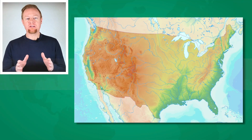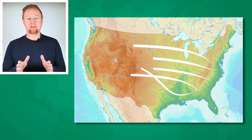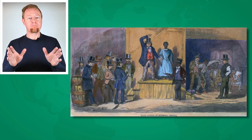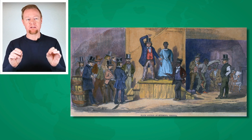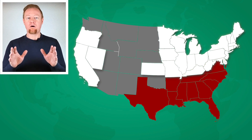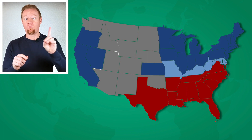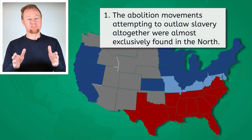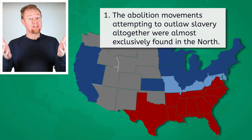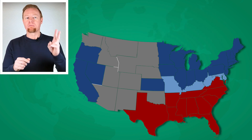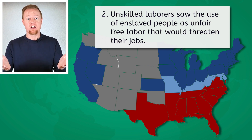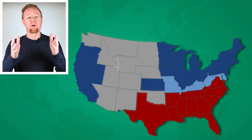As you learned in a previous lesson, the United States was aggressively expanding across the Great Western Frontier. This expansion led to many challenges, but none more impactful to the growth of the U.S. than the question of slavery. The 22 more heavily mechanized and industrialized northern states generally did not want slavery expanded for two reasons. Number one, the abolition movements attempting to outlaw slavery altogether were almost exclusively found in the north — they saw slavery as an immoral and dehumanizing practice. Number two, unskilled laborers saw the use of enslaved people as unfair free labor that would threaten their jobs. This view was held by many workers in the growing west as well.